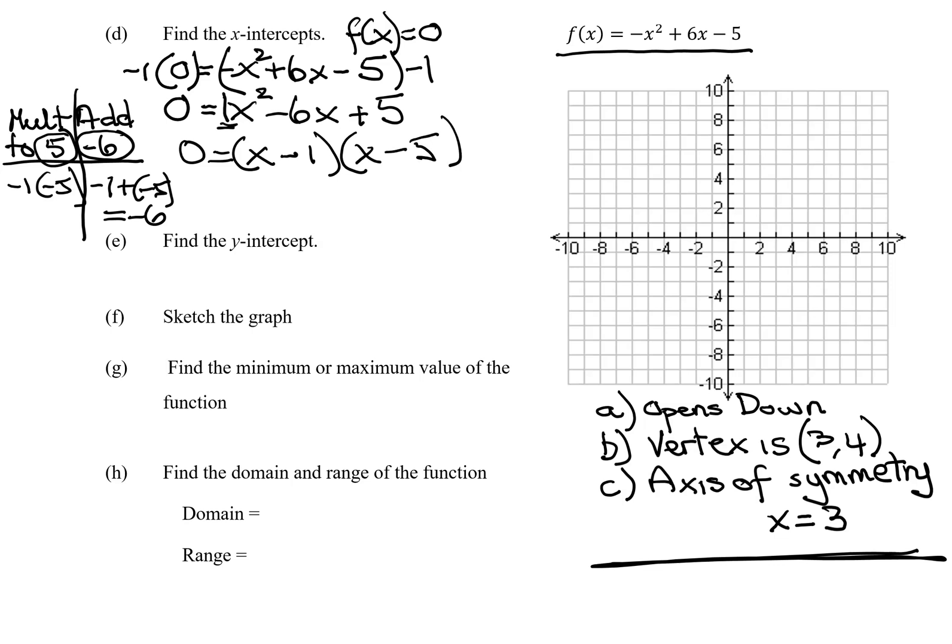And so two numbers multiply together to give 0. Set each of them equal to 0. So I get x minus 1 is 0. So x is 1. x minus 5 is 0. x equals 5.